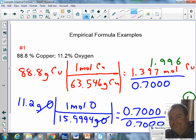Now is that value very very very close to two? Yes. So we're going to say that this ratio is a two to one ratio, right? So when I write my empirical formula for this, I have copper - how many? Two. How many oxygens? One. So my empirical formula will be Cu2O.